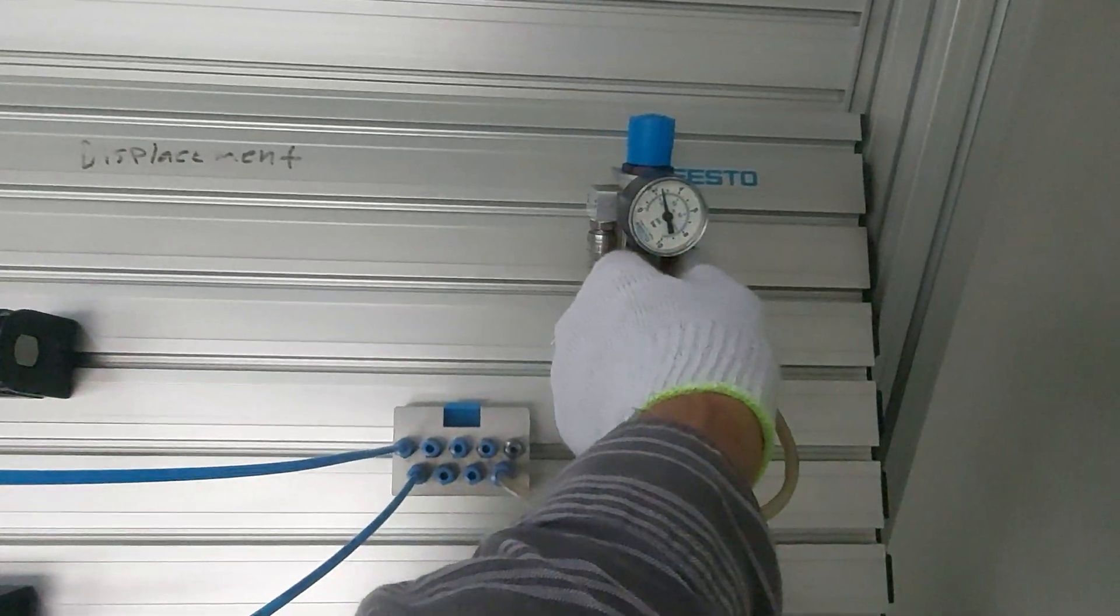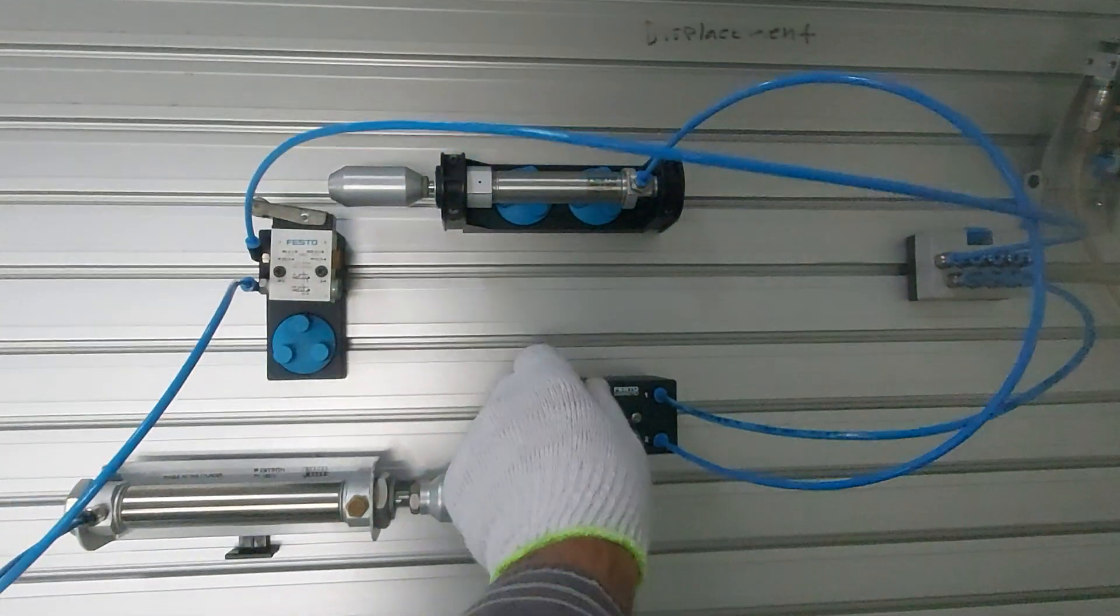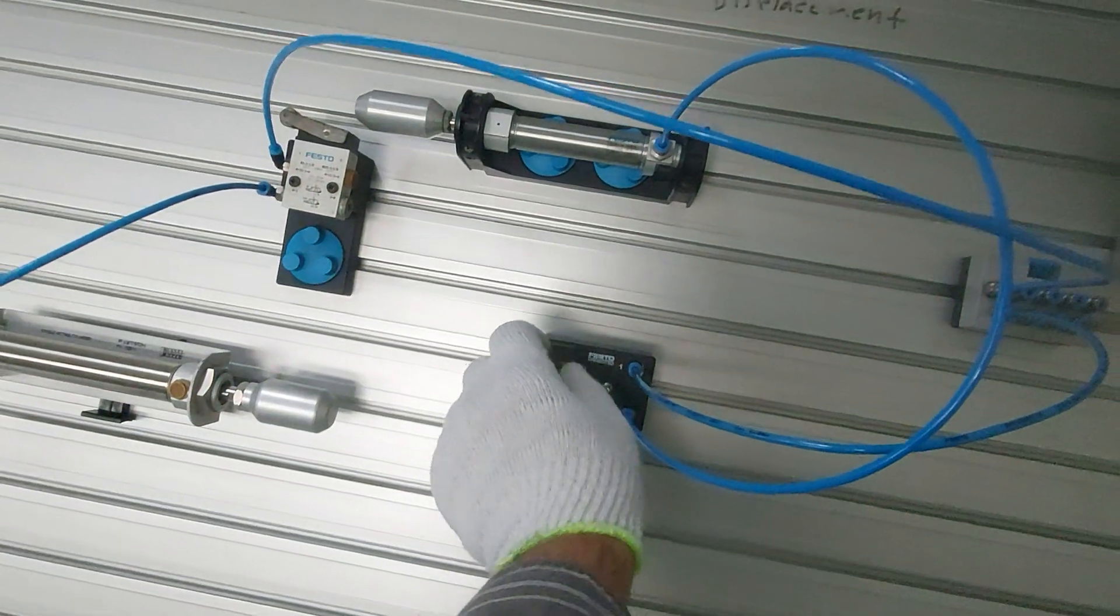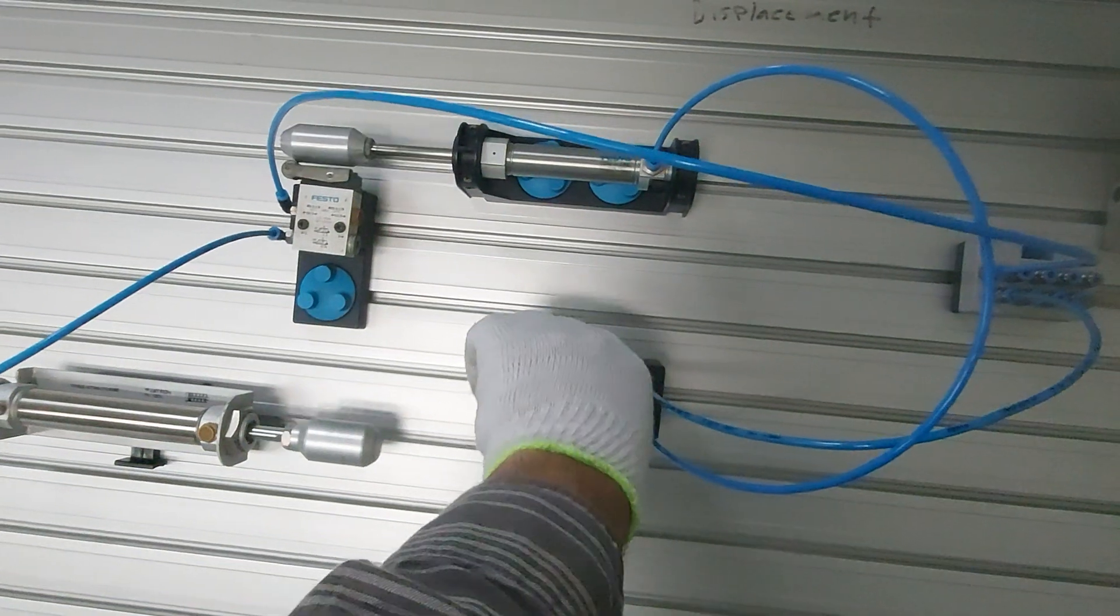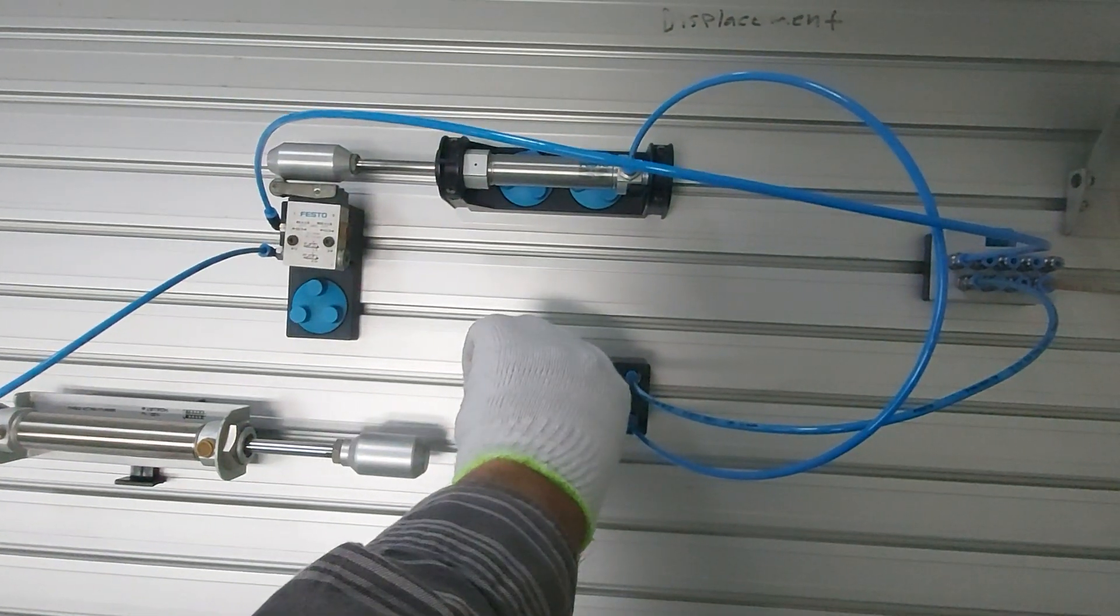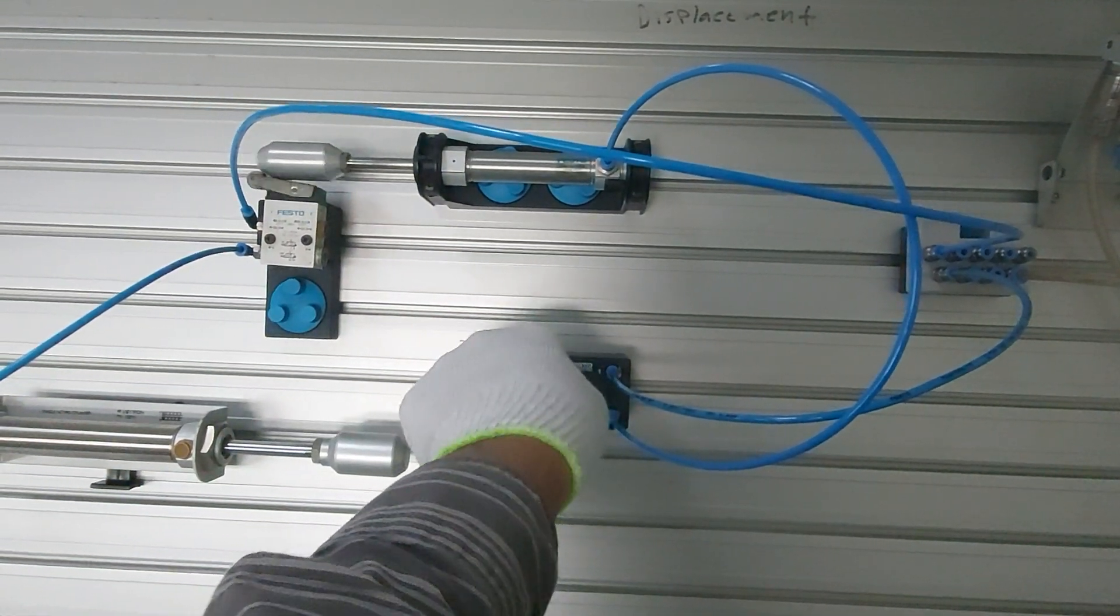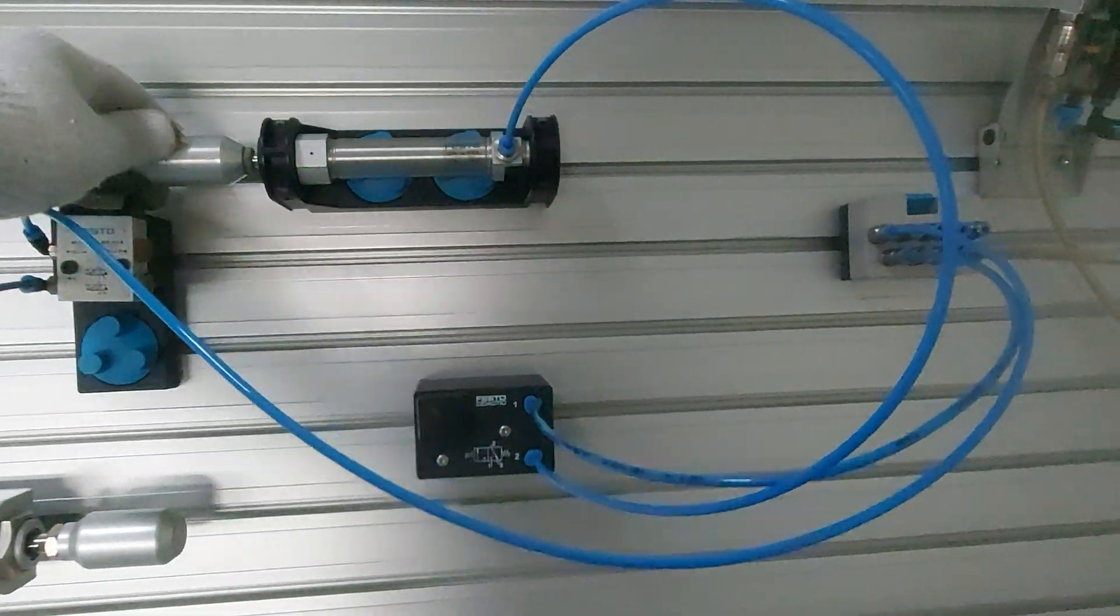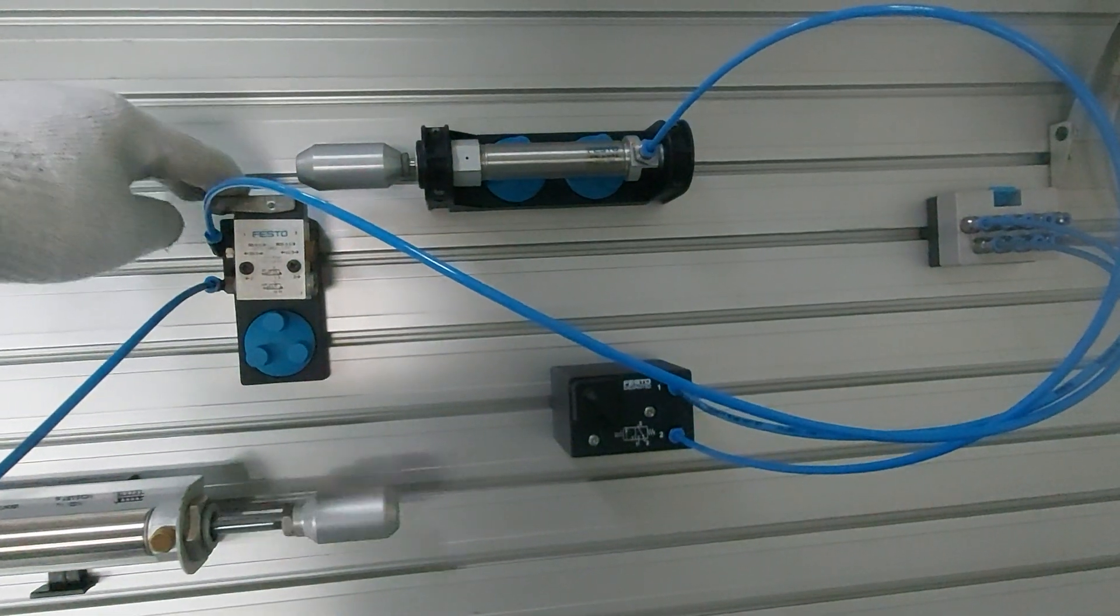So let's see how it works. Now we have the supply. Once I open the circuit, once I give the power to this one, this will actuate this one and this will actuate this one. So when this piston touches the roller, it will actuate.